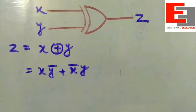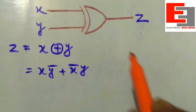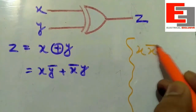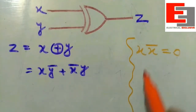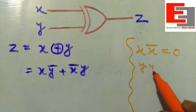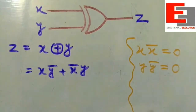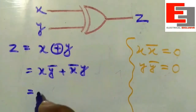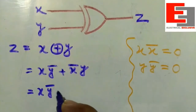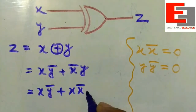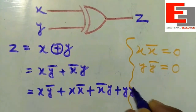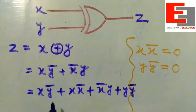In this class we shall further re-simplify this expression. Before that we need to know some facts: X into X̅ is equal to 0, and Y into Y̅ is equal to 0. You can easily find these two expressions in the Boolean formulas. Now I'm going to put these two expressions into it, giving us XY̅ + XX̅ + X̅Y + YY̅.